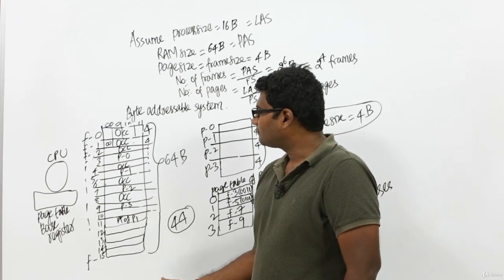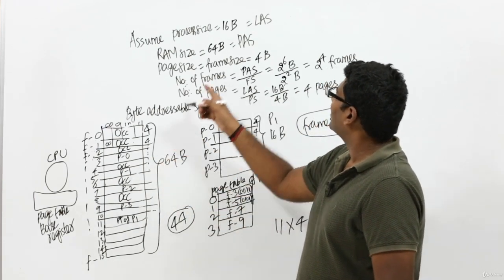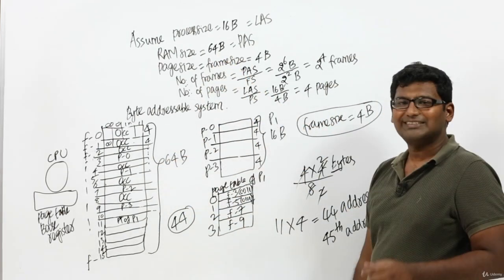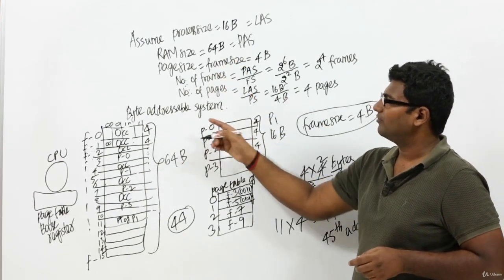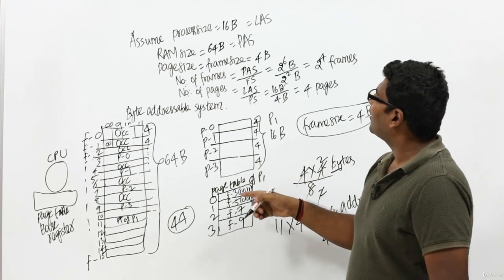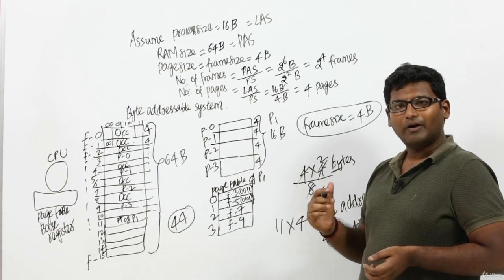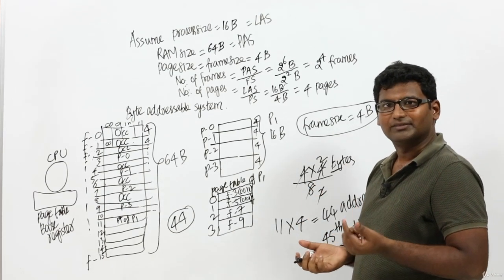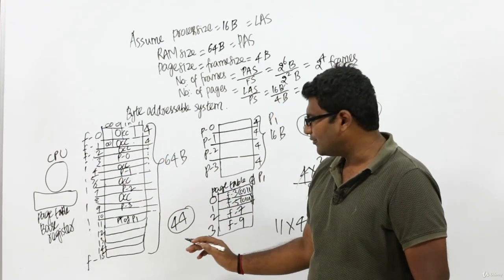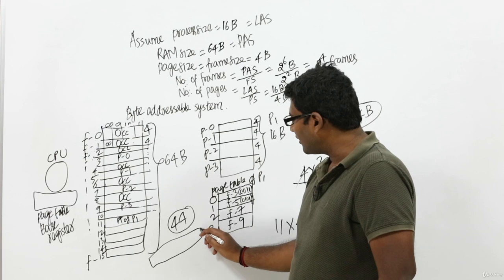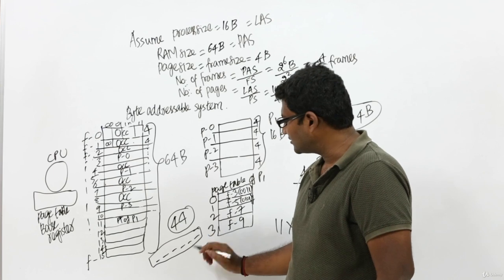How 44 will be indicated depends on the size of the RAM. The total size of RAM is 64 bytes, which means 6 bits are needed to address it — every byte is addressable, so we need 64 addresses, and to address 64 locations we need exactly 6 bits. So any address is indicated using 6 bits, and we need to indicate the number 44 using 6 bits.